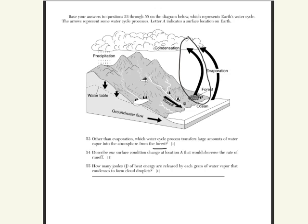Another question is, describe one surface condition change at location A that would decrease the rate of runoff. Location A is right here, and as we can see,